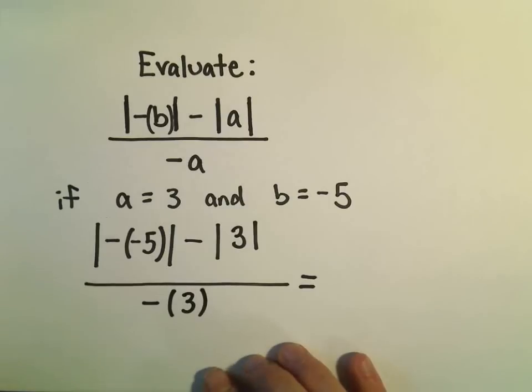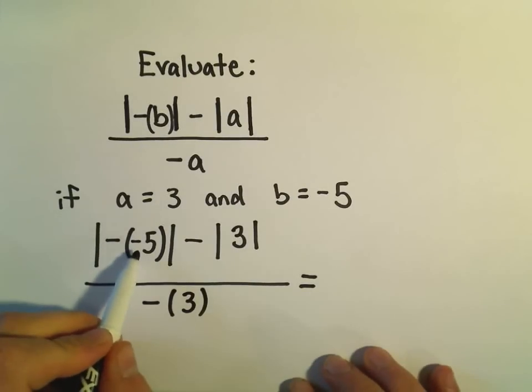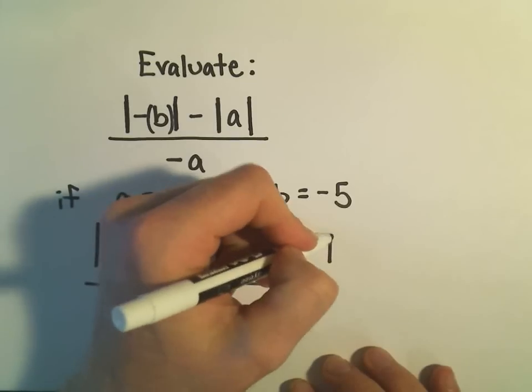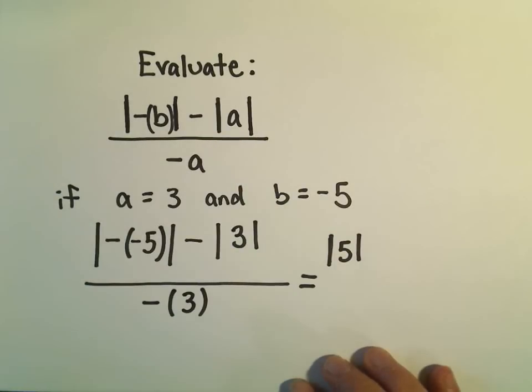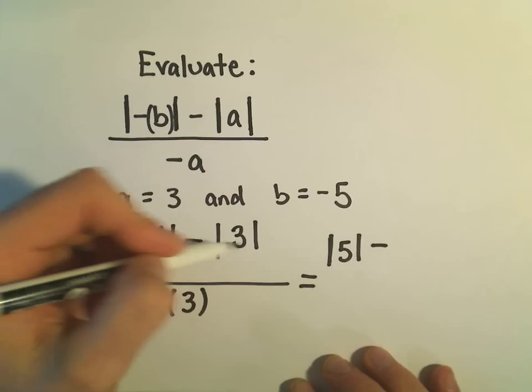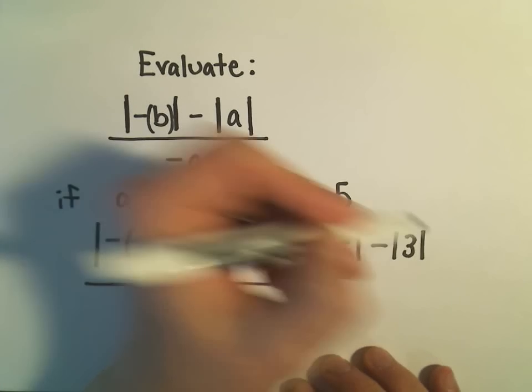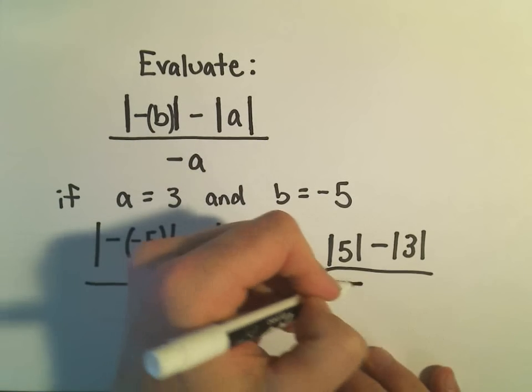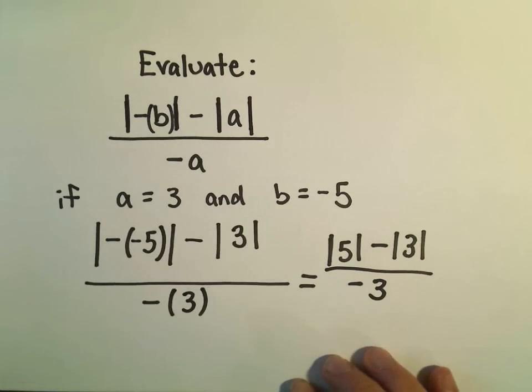And if we keep simplifying this, we've got the negative of negative 5, which inside the bars, inside the absolute value, will be positive 5, minus the absolute value of positive 3. Again, being divided by negative 3.